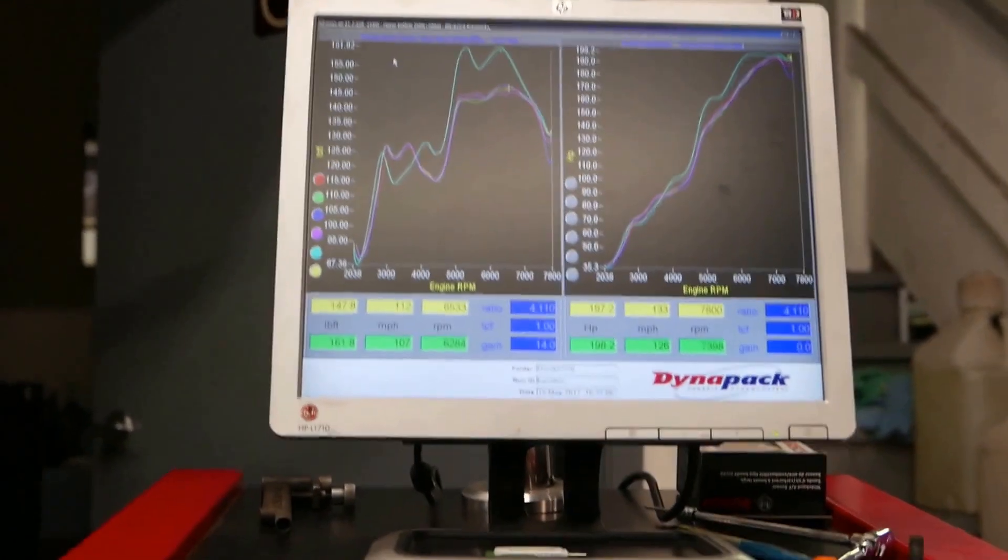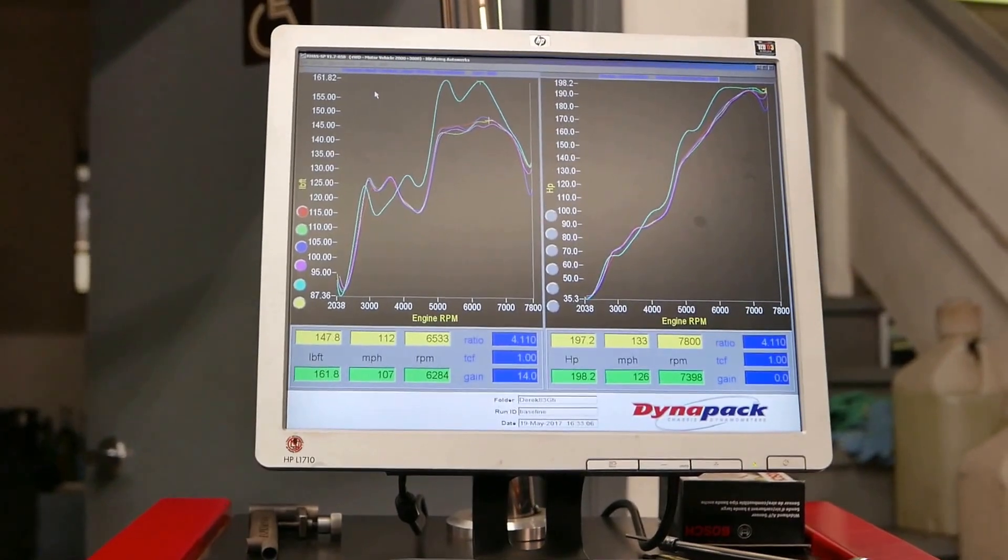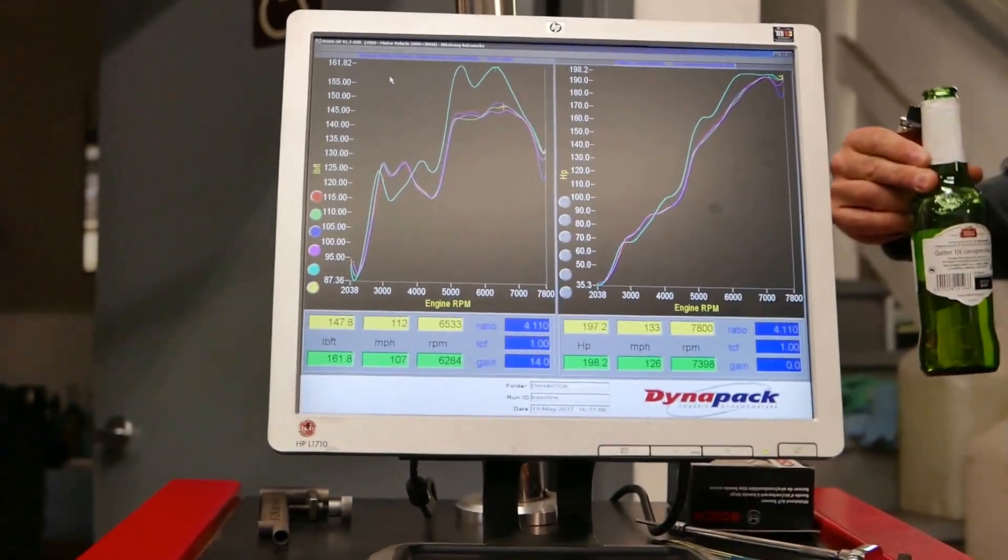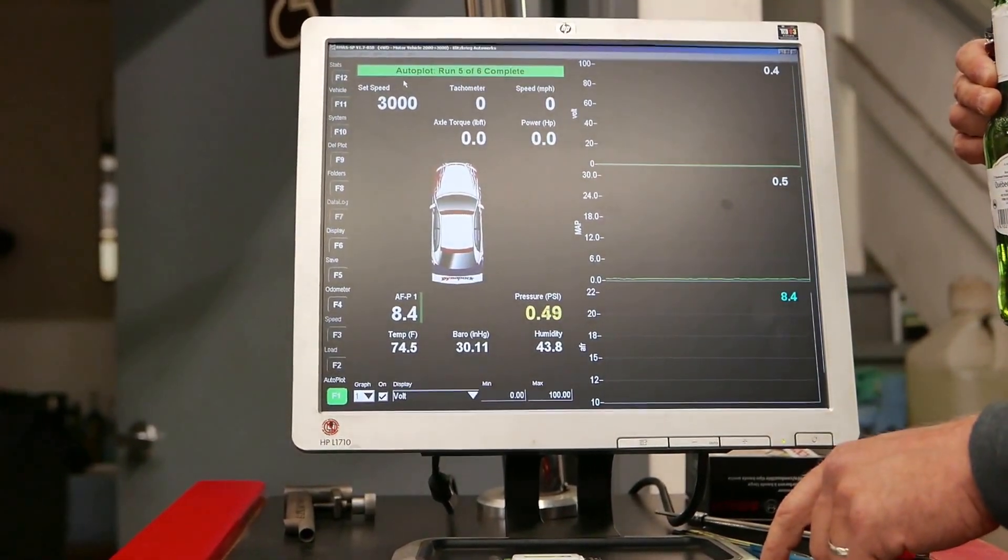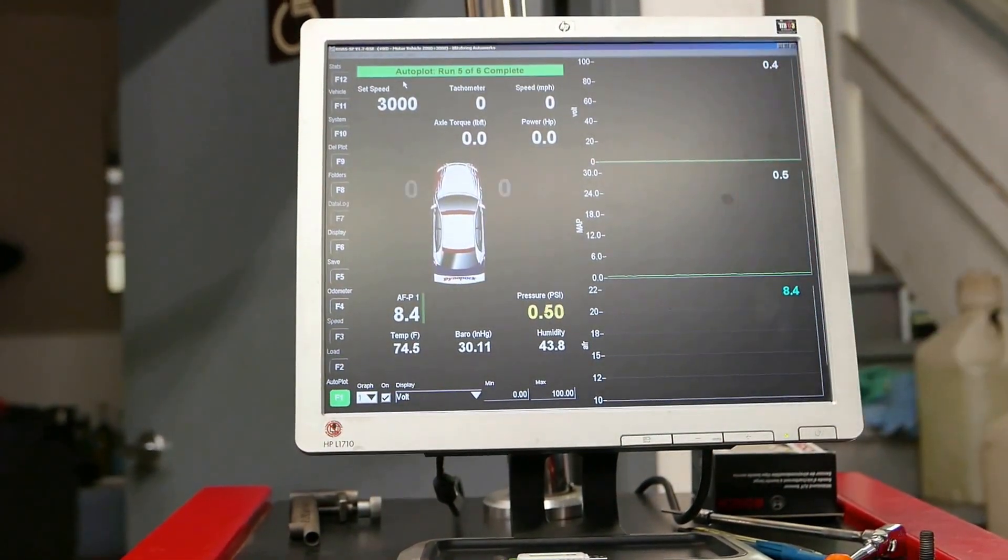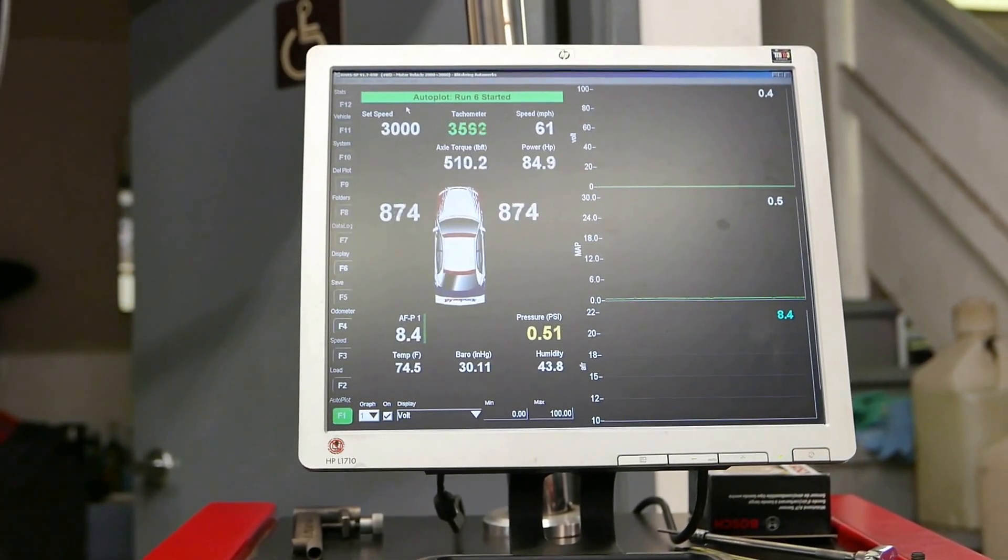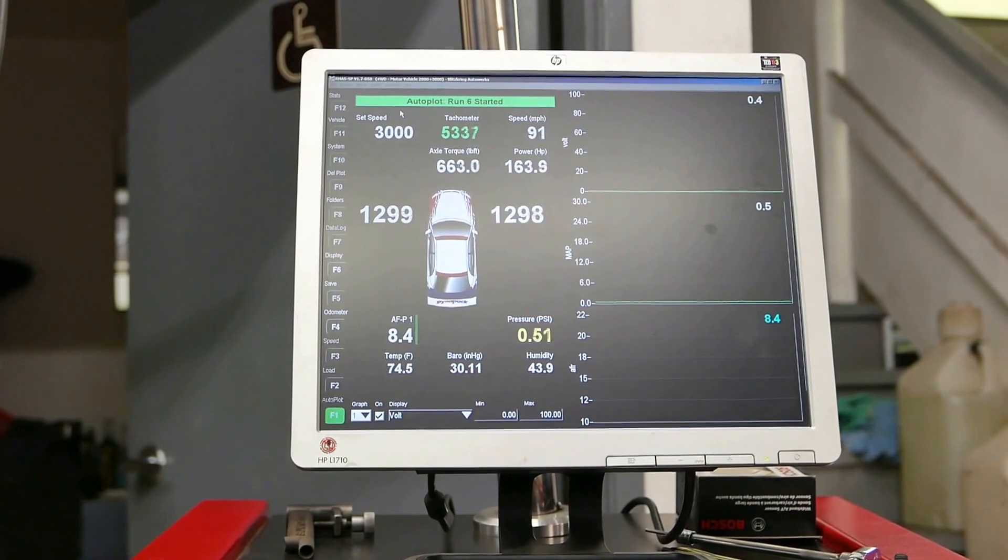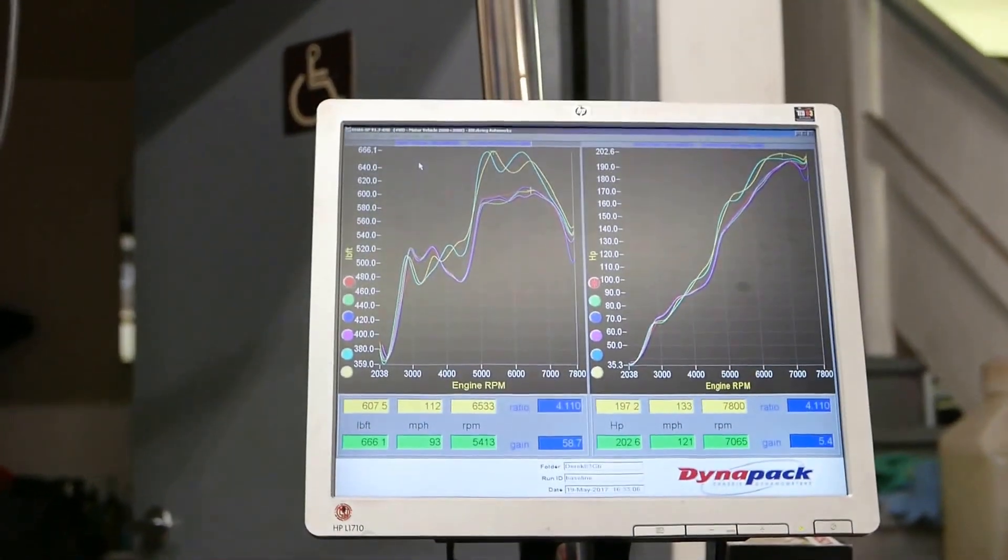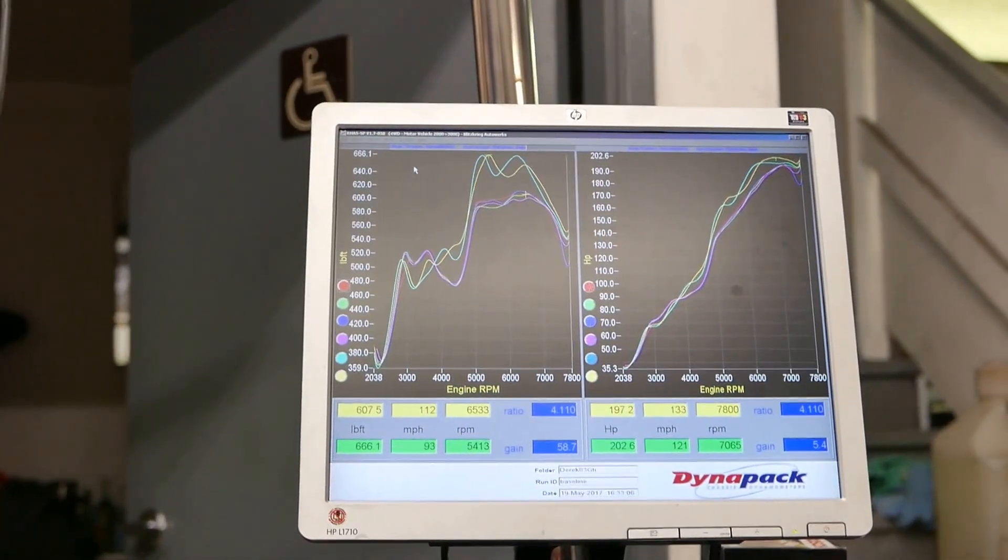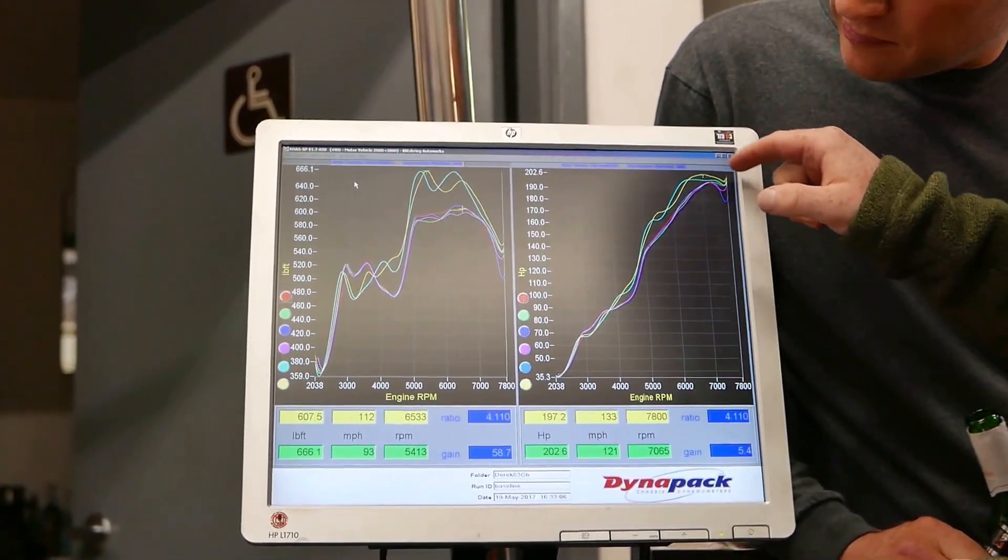So after that very dramatic improvement in mid-range from removing the air box, we're going to the shorter trumpets. So let's have a look. Are we ready to roll? Here we are. A lot more power. Very interesting. Very under-curving.